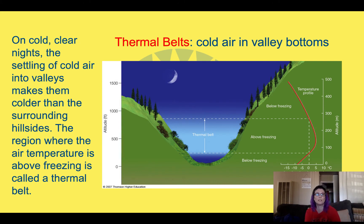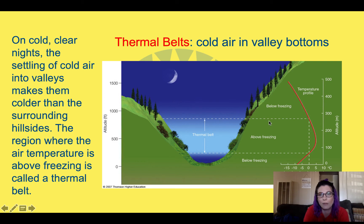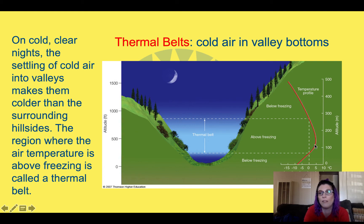We also have another thing called a thermal belt, and this happens in valleys. This phenomenon is basically where that cold air is going to slide down the hill into the bottom of the valley, creating below-freezing temperatures at the bottom. Then we have this thing called a thermal belt right above that, which is going to be above freezing, and then above the thermal belt it'll be below freezing again. So it has this warm air just in the middle. Basically what that looks like is an inversion — it's going to be an inversion until you hit the warmest part of the thermal belt, and then it'll start getting colder again.